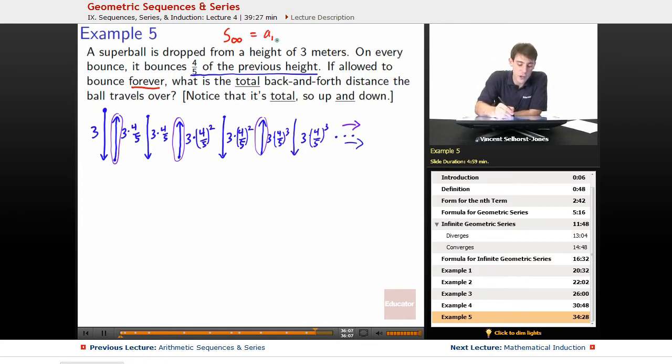So that is equal to the first value times 1 over 1 minus the rate. That was what we figured out the infinite sum comes out to be. So first value times 1 over 1 minus the rate. All right, so in this case, for our up jumps, our up bounces, all the ups is going to wind up being...